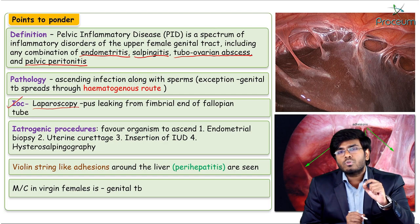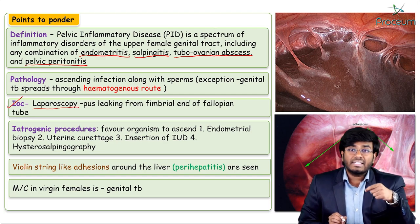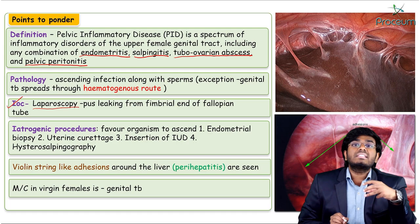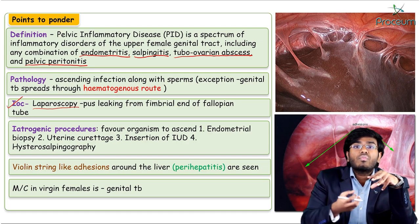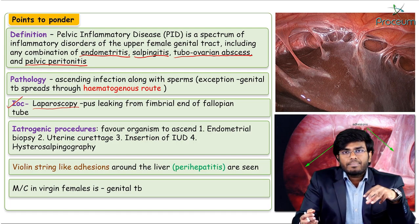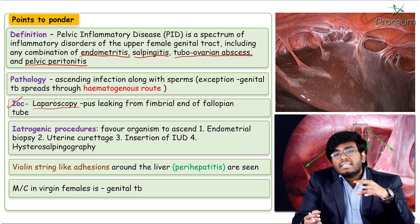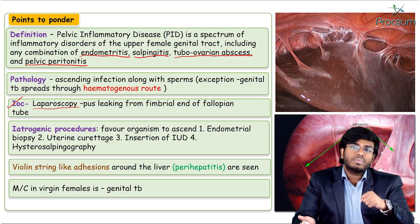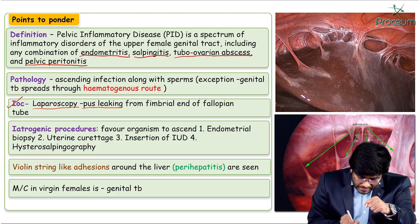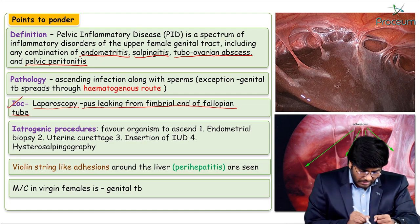The investigation of choice for PID is laparoscopy. On laparoscopy, since the fallopian tubes are affected with salpingitis, you can see pus extruding from the fimbrial end of the fallopian tubes — you are visually documenting the pus leaking from the fimbrial end.